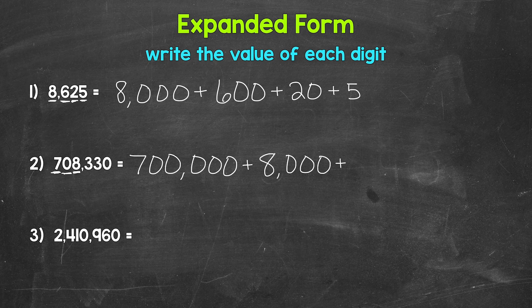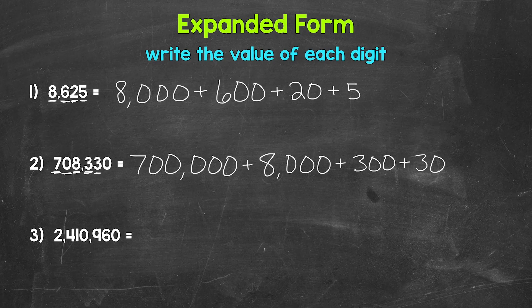Then we have a 3 in the hundreds place, so the value of this 3 is 300. Then another 3 in the tens place, value of 30. And then we have a 0 in the ones place, so we don't have a value to write for the ones place. That's the expanded form of 708,330.